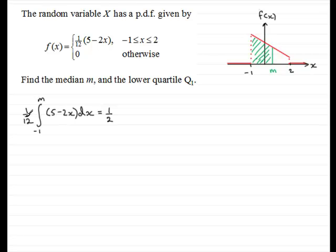What I'm going to do is times both sides by 12 and integrate (5 - 2x). So if we integrate, we've got 5x - x² and that's going to go between the limits minus one and m, which equals six. Now I'm going to put the limits through, so we're going to have 5m - m² minus when we put the minus one through, so we've got five times minus one is minus five and then we've got another minus, so that's minus six, and that's going to equal six.